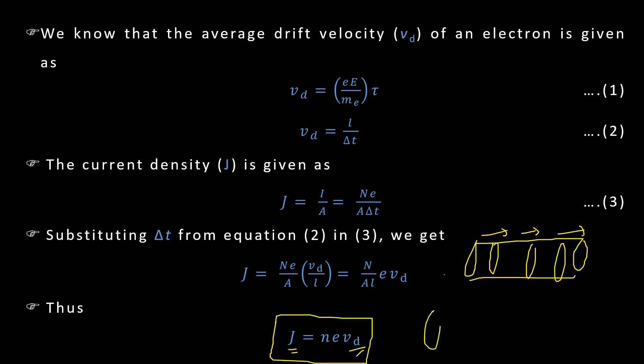But suppose if I have conductor of say this shape, what is the difference? Difference now is that the cross sectional area is not uniform. So now if I check J value here, say in first cross section, and if I check J value here in say second cross section, current density changes.